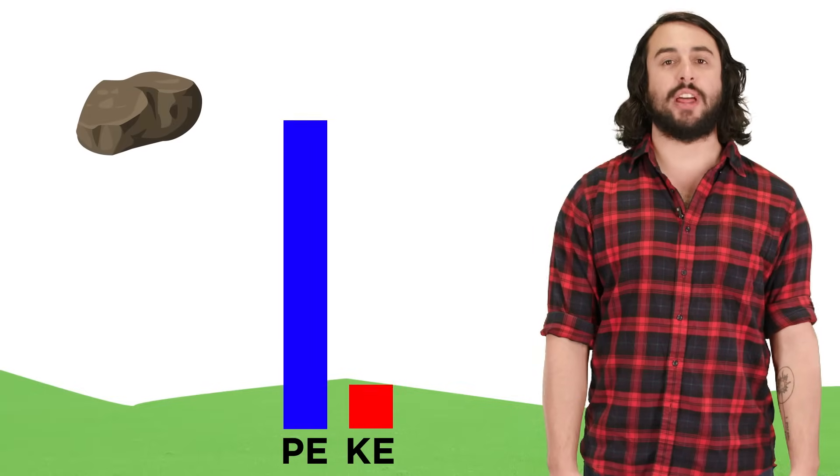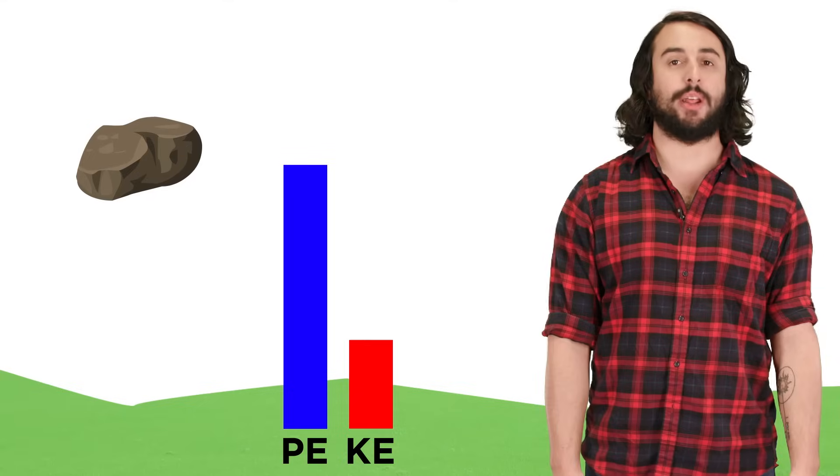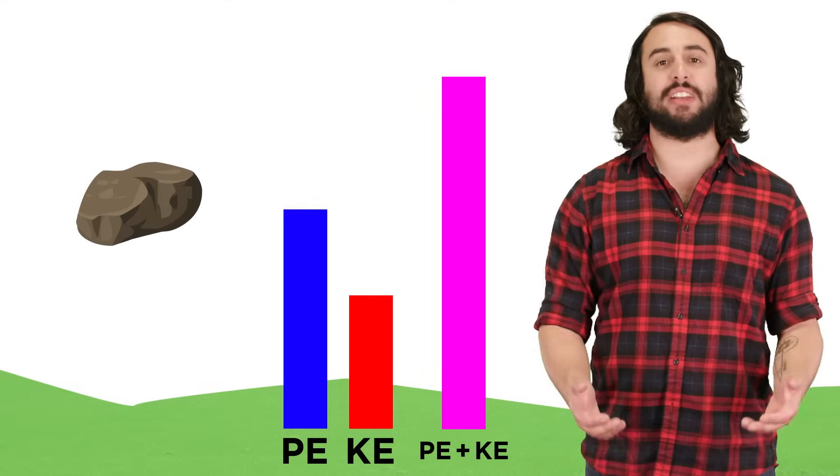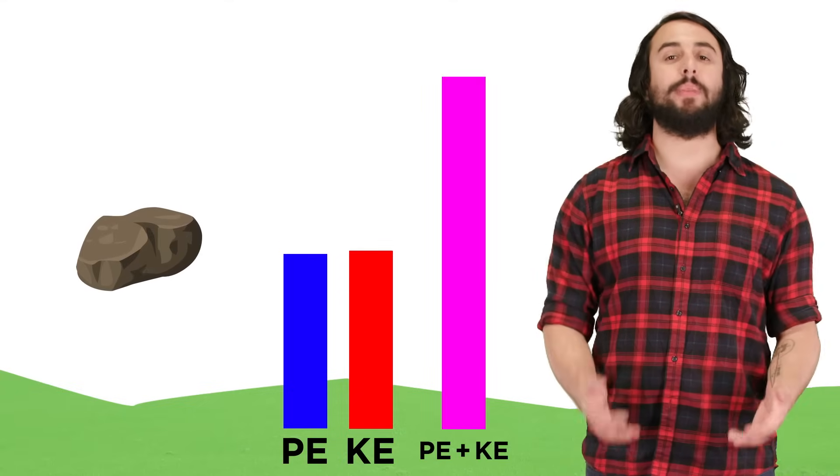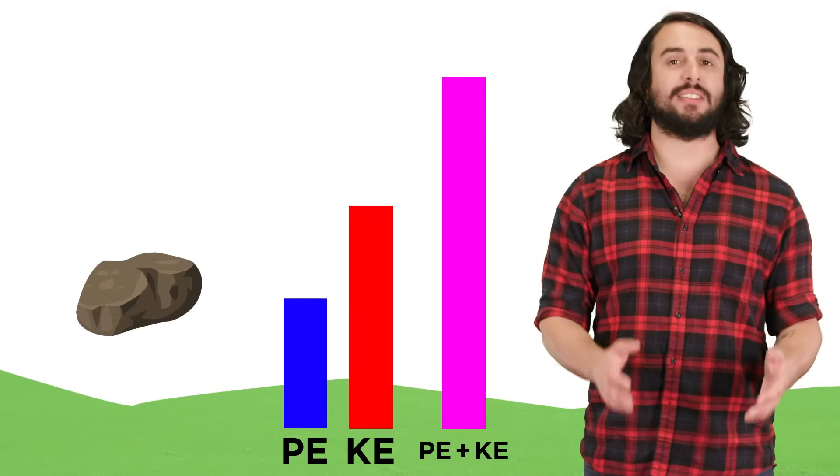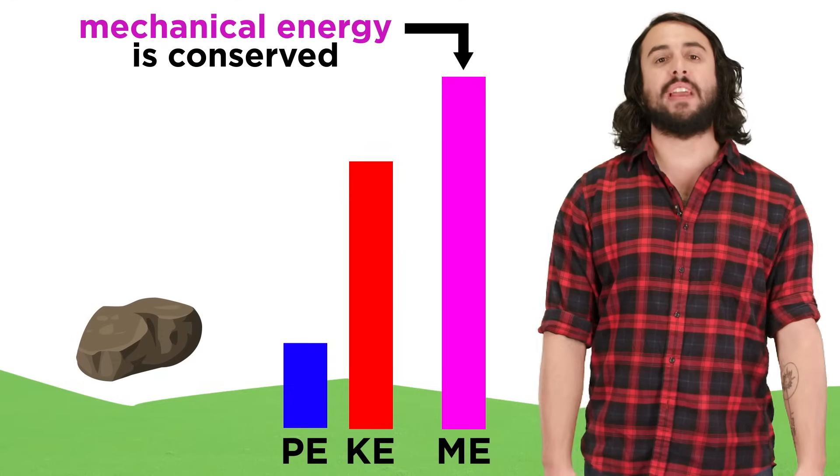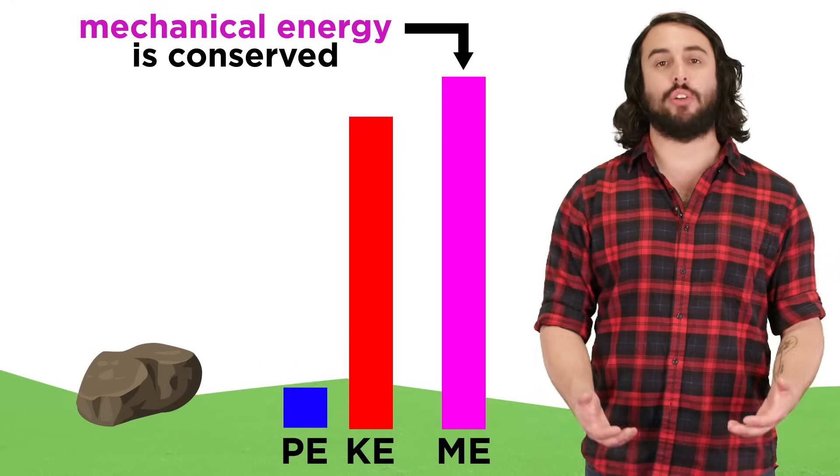As an object falls, potential energy is converted into kinetic energy, but the sum of the potential and kinetic energies of the object will be the same at every instant during the free fall. We can call this sum the mechanical energy of the system.